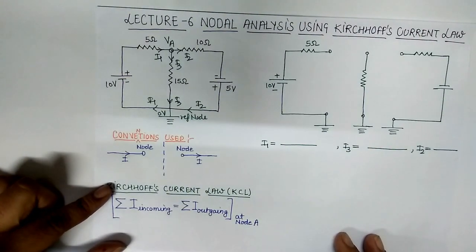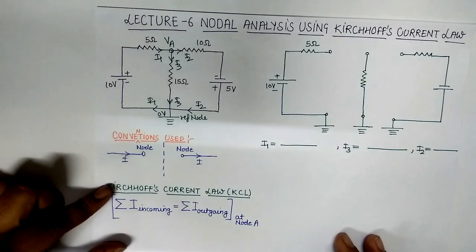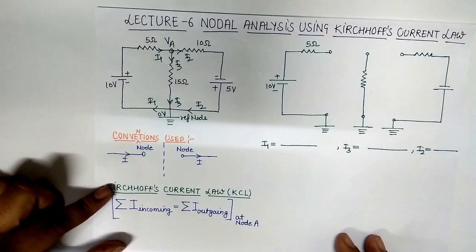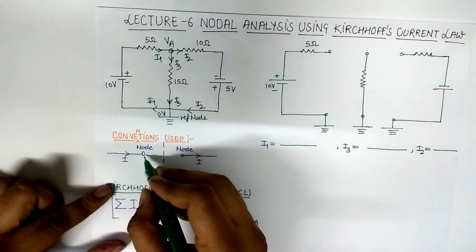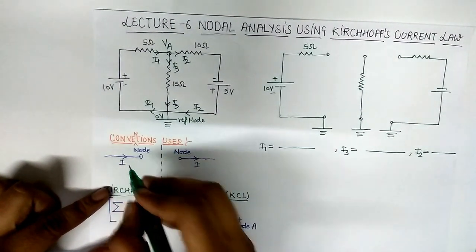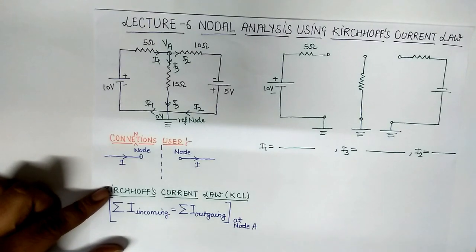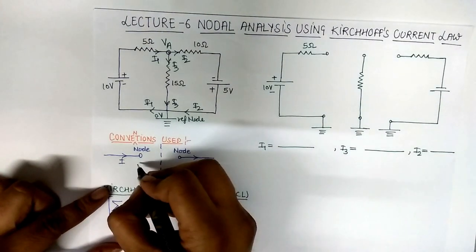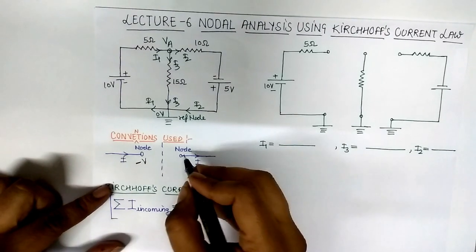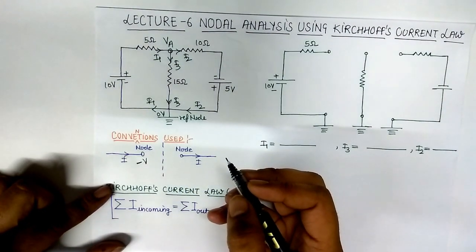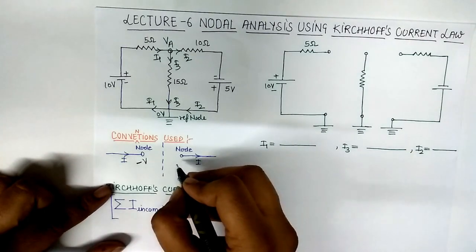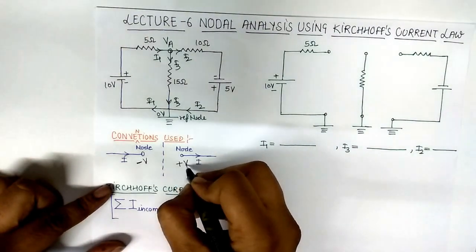After assuming current in every branch and at every node, we follow some conventions. Let us say in a node, if any current is incoming, so we write this node is minus V. If any current is outgoing from any node, so we write plus V.